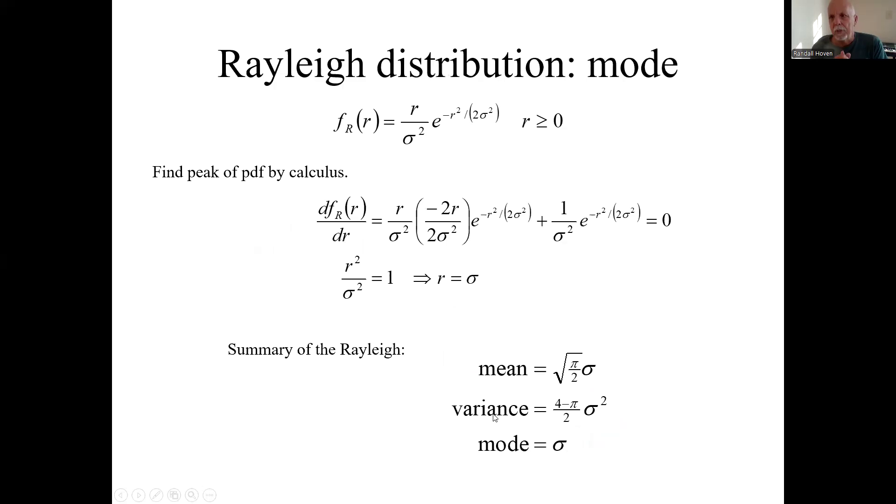Now let's do the mode. Remember what the mode is? That's the most likely value or the peak of the PDF. If it has a unique peak. This guy does have a unique peak. We find that peak by simple calculus. We take the derivative and set it equal to zero. That will be the peak point.